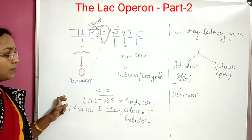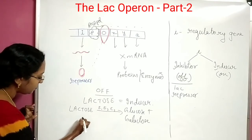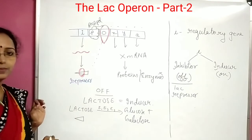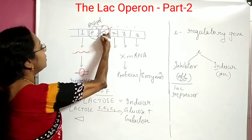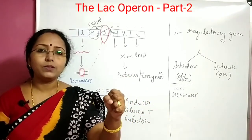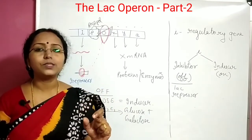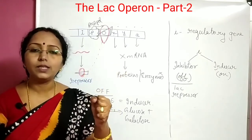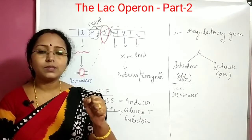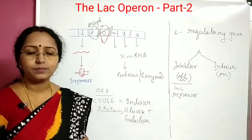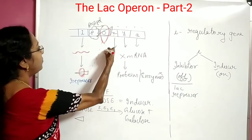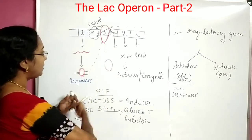When lactose is present in the medium, lactose goes and binds to the repressor — either the free repressor or the repressor bound to the operator. When lactose binds to the repressor, the repressor undergoes a conformational change, and it can no longer occupy the operator region.